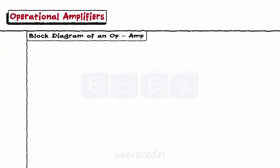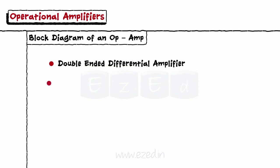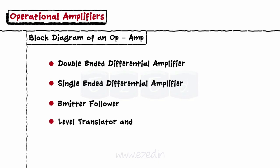Let's study the block diagram of an op-amp. It has different blocks such as a double-ended differential amplifier, single-ended differential amplifier, emitter follower, level translator, and an output driver.